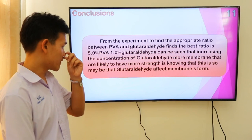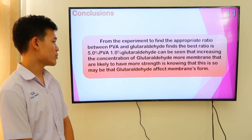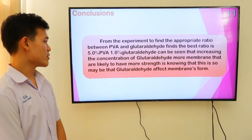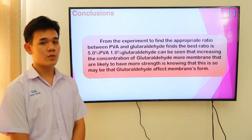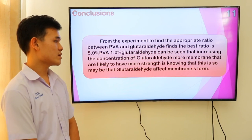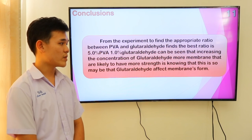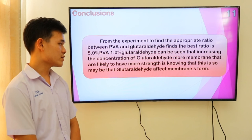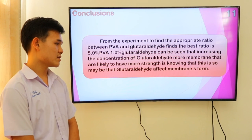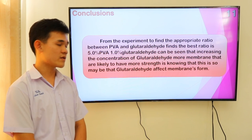Conclusion: From the experiment to find the appropriate ratio between polyvinyl alcohol and glutaraldehyde, the base ratio found is 5% polyvinyl alcohol with 1% glutaraldehyde. It can be seen that increasing the concentration of glutaraldehyde produces membranes that are likely to have more strength, suggesting that glutaraldehyde acts as a cross-linker that strengthens the membrane.